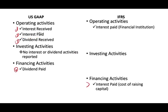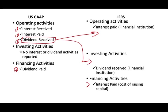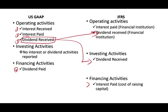Dividend Received under IFRS could be Operating Activities or Investing Activities. If you are a financial institution and that's your business — you invest money in assets and those assets generate dividends — the dividend you receive is considered operating. If you're not a financial institution, like Bank of America, Charles Schwab, or Merrill Lynch, and you've just invested money in some stocks and receive dividend, that dividend is considered investing because it comes from your investments.